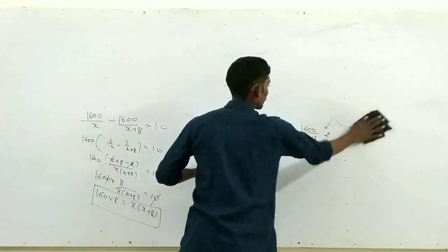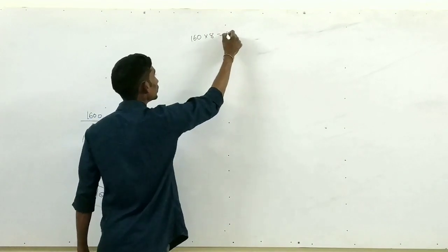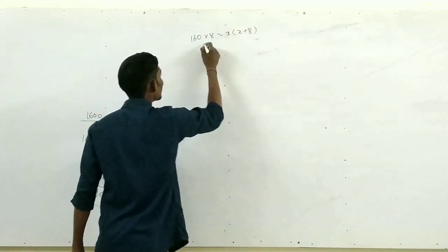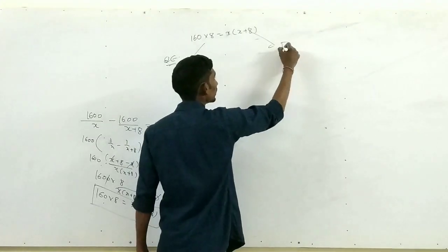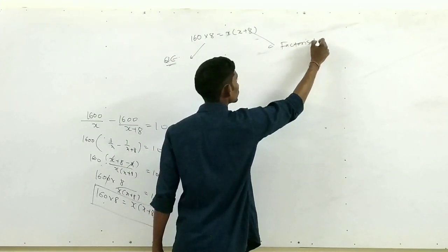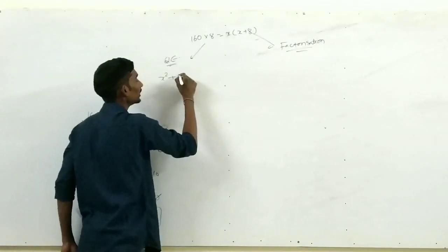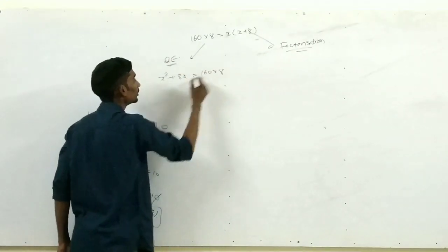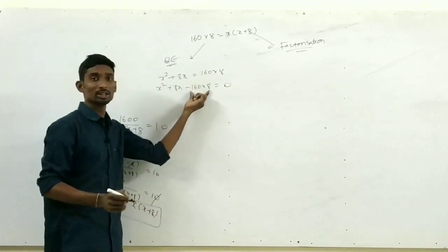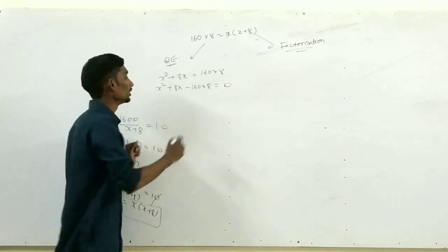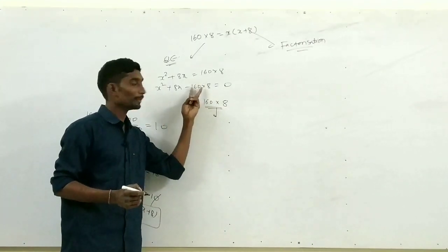यह हो गया bookish way। अब इसको दो तरीकों से solve कर सकते हैं। पहला तरीका: quadratic equation बनाओ — x² + 8x − 1280 = 0। दूसरा तरीका: factorization। ऐसे दो numbers चाहिए जिनका product 1280 हो और sum 8 हो।